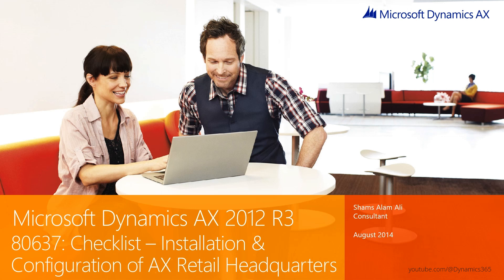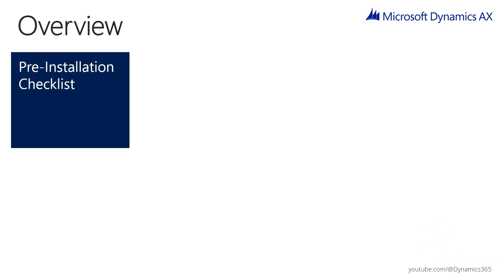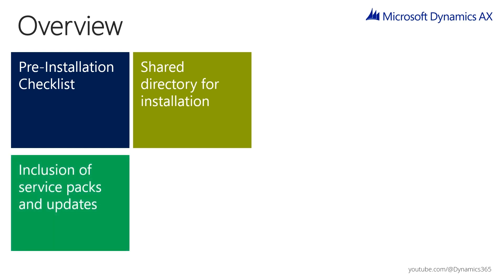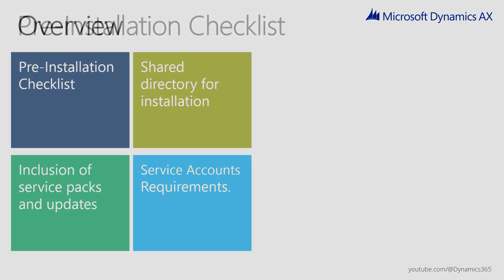Checklist for Installation and Configuration of AX Retail Headquarters. In this module, we will be discussing the prerequisites for installing and configuring AX Retail Headquarters. The objective of this module is to provide an understanding of the Pre-installation Checklist for Retail Headquarters, along with an overview of the Shared Directory for Installation, Inclusion of Service Packs and Updates in a New Installation, and Requirements for Service Accounts.